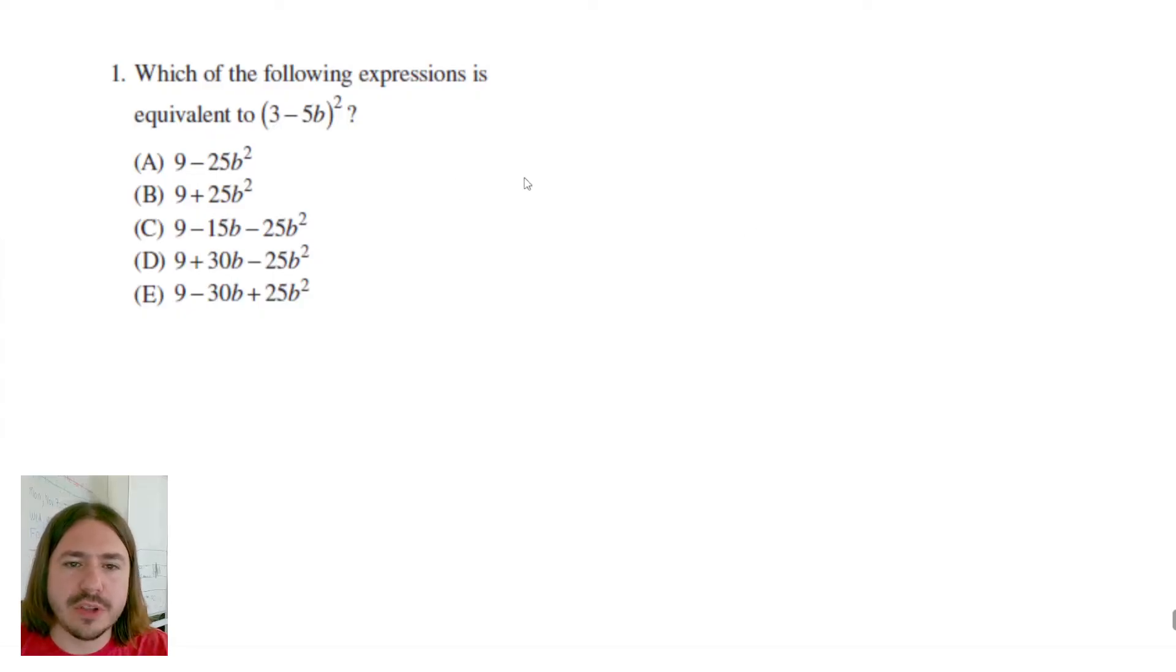To answer this question, we need to actually square that binomial. So if we have 3 minus 5b squared, the squared part is telling us we need to multiply this by itself. That's the definition of when you square something. I'm just going to rewrite this as 3 minus 5b times 3 minus 5b.